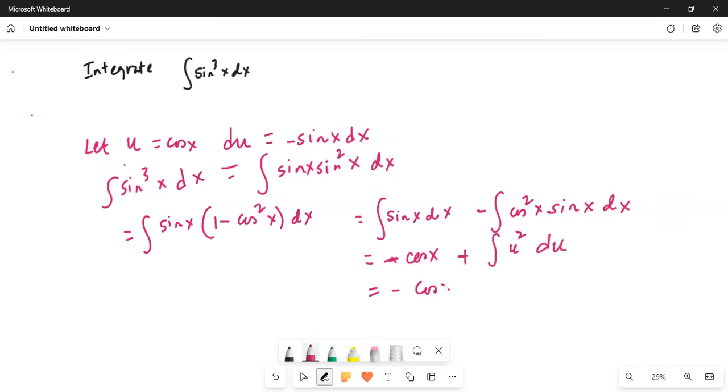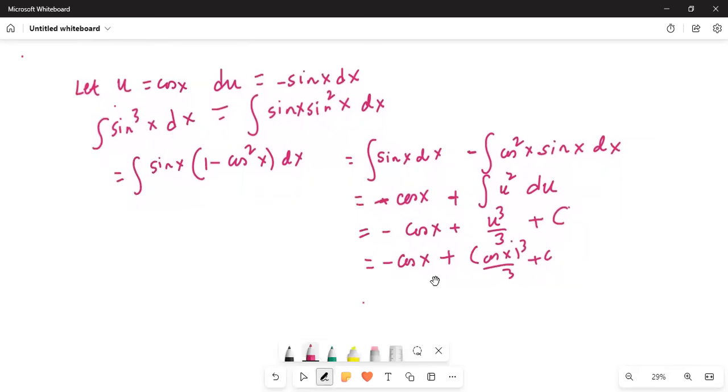This becomes minus cosine x plus u cubed by 3 plus integration constant. Now I'll substitute the value of u. Minus cosine x plus u cubed is cosine cubed x by 3. Let me write that clearly: for u cubed I write cosine cubed x by 3 plus c. This becomes equal to minus cosine x plus cosine cubed x by 3 plus c.